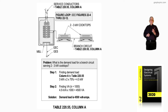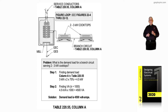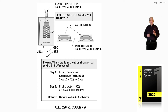Looking at this particular item, the branch circuit has two 3KW cooktops on the branch circuit. Let's take this in steps. What is the demand load for a branch circuit serving two 3KW cooktops?